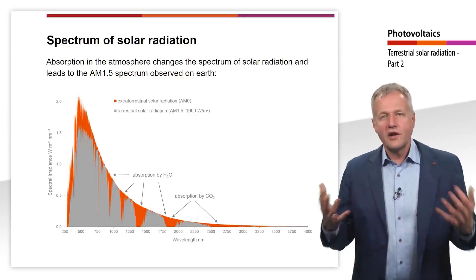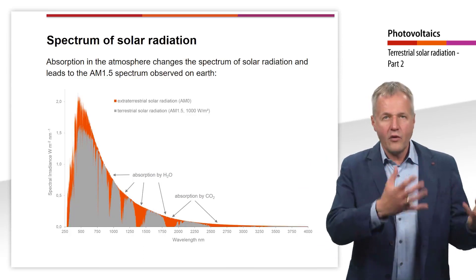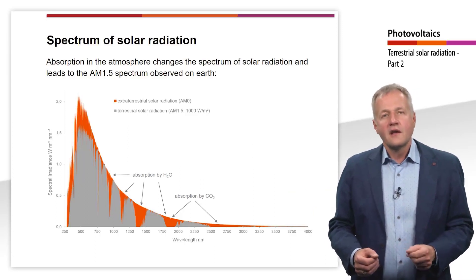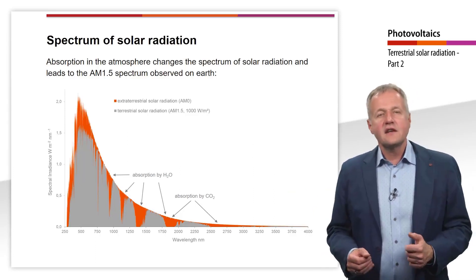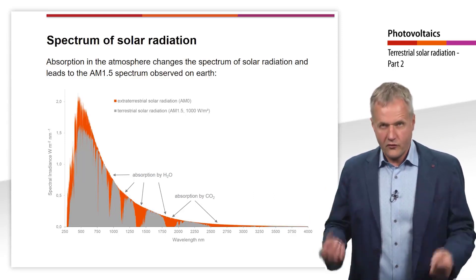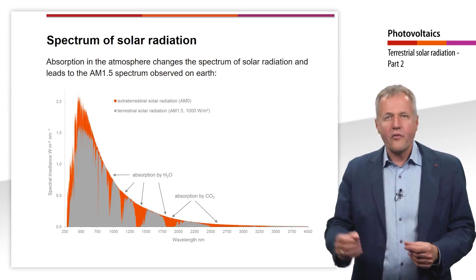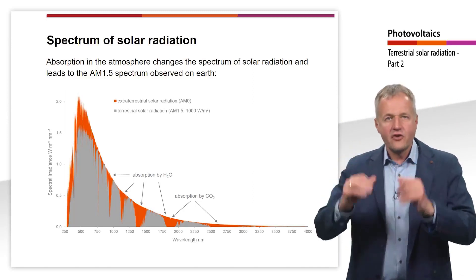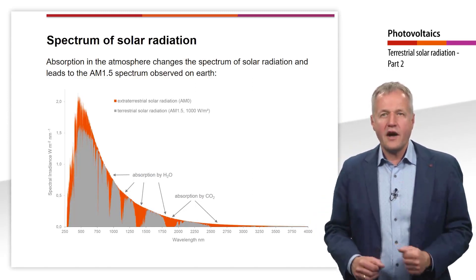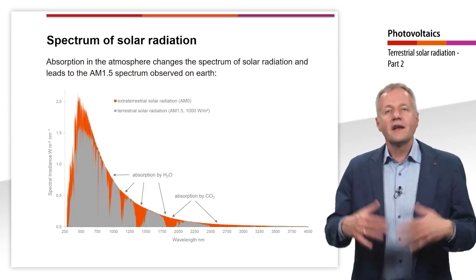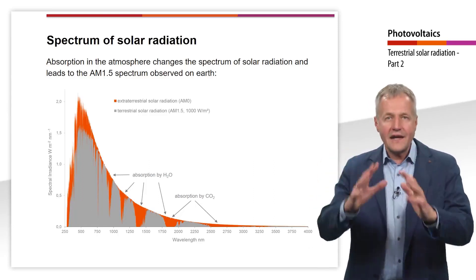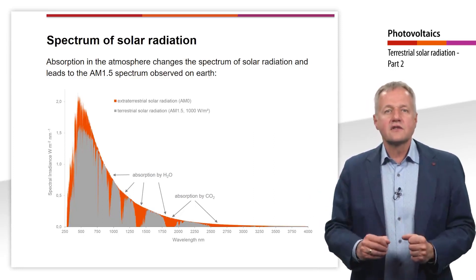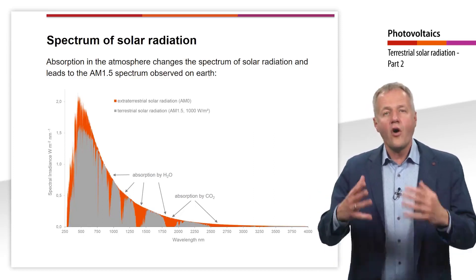This diagram shows the solar spectra at AM0 and AM1.5. The x-axis displays the wavelength in nanometers, and the y-axis shows the radiation intensity in Watt per nanometer per square meter. The red spectrum represents the extraterrestrial solar radiation at AM0, and the grey spectrum represents the terrestrial solar radiation at AM1.5. Water vapor, CO₂, and other gas molecules absorb part of the sunlight, changing the spectrum to produce the AM1.5 spectrum observed on Earth.